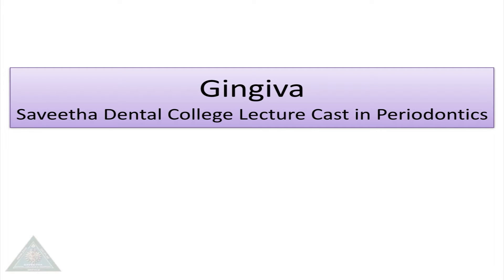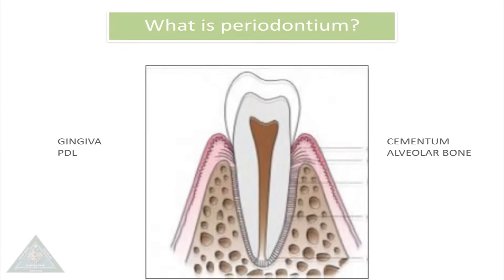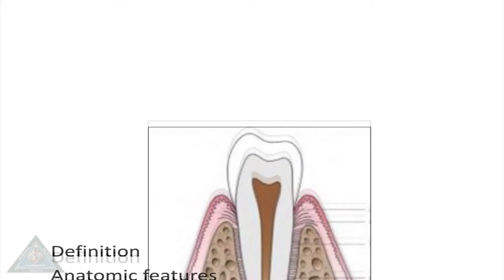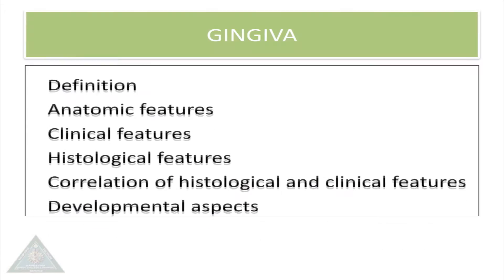Welcome to Savita lecture course. Let us see about Gingiva. Periodontium refers to the supporting tissues of the teeth. It comprises of two soft tissues — gingiva and periodontal ligament — and two hard tissues — alveolar bone and cementum.